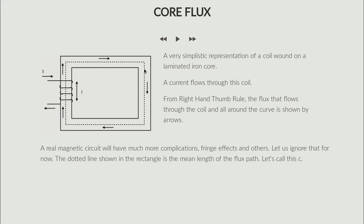The dotted line shown is the mean length of the flux path. The flux flows in a rectangular path, so the flux at the outer edges travels a longer path than at the inner edges — hence we use the mean length, which we call C. The length L is the length of the coil, and N is the number of turns wound over that length L. The mean length of the magnetic path is C.